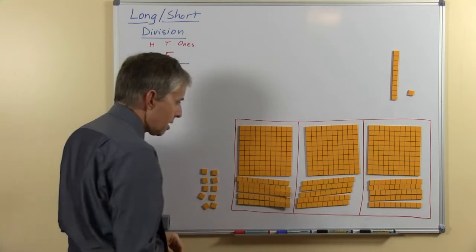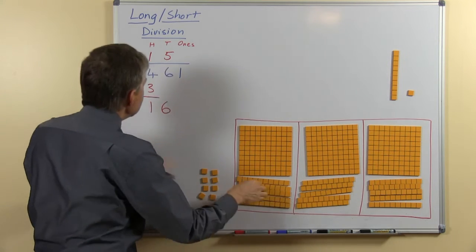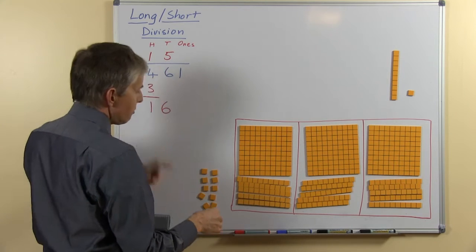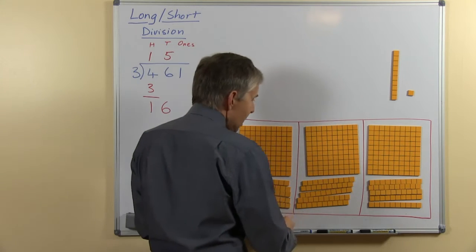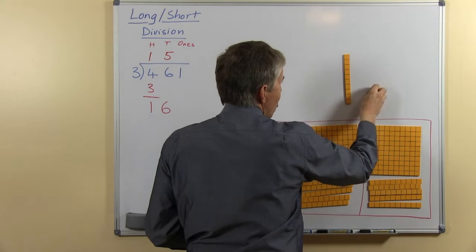Alright so everybody has 150 so far and that's what this shows, 105 tens. Last bit, now we have 1 ten and 1 one left over, we can't share this 10 so again we're going to swap it.